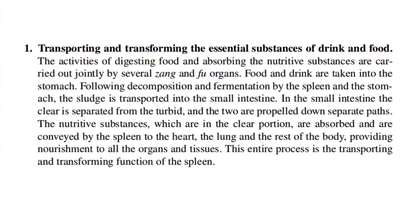There are two main aspects to the spleen's role. One: transporting and transforming the essential substances of drink and food. The activities of digesting food and absorbing nutritive substances are carried out jointly by several Zang and Fu organs. Food and drink are taken into the stomach; following decomposition and fermentation by the spleen and stomach, the sludge is transported into the small intestine. In the small intestine the clear is separated from the turbid. The nutritive substances in the clear portion are absorbed and conveyed by the spleen to the heart, lung, and the rest of the body, providing nourishment to all organs and tissues. The entire process is the transporting and transforming function of the spleen.